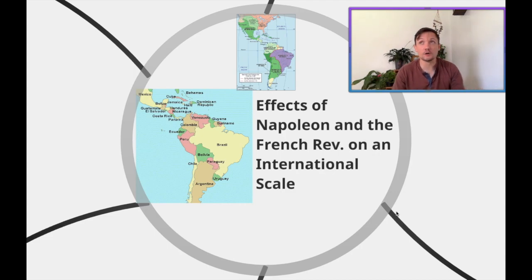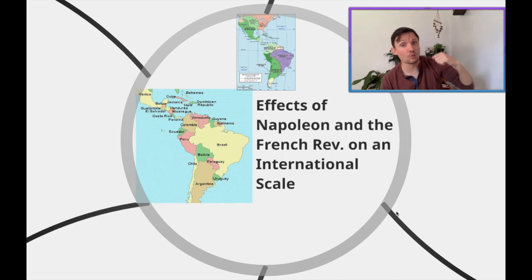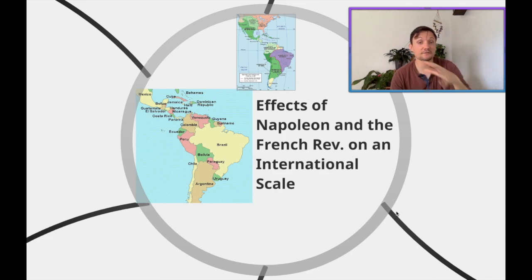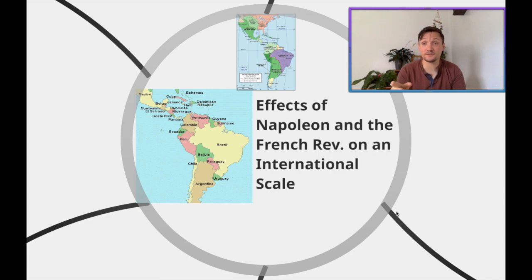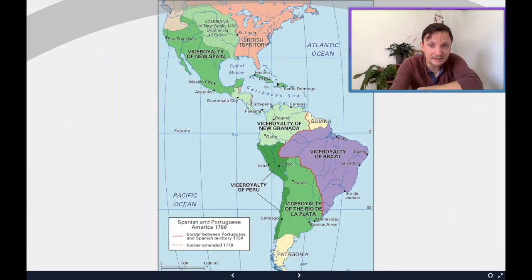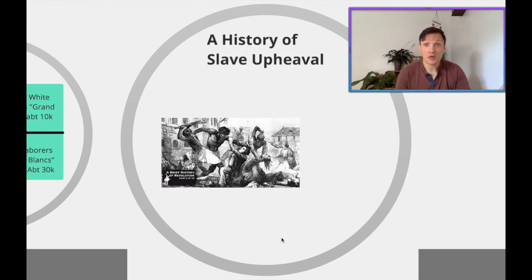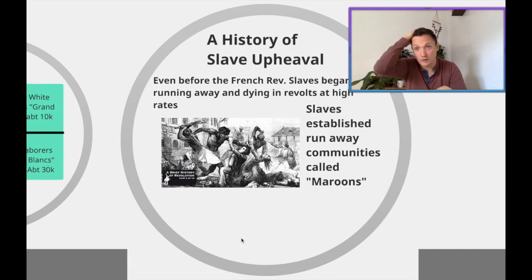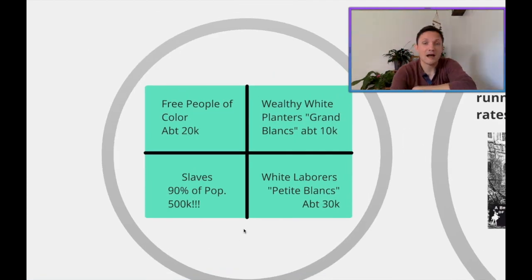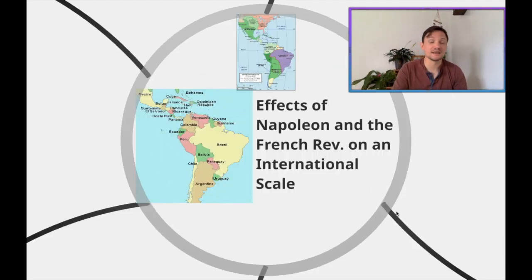Getting into it — the crazy stuff going on in Europe — we're going to hit pause on that for a little bit and wind it back. We're now going to talk about the effects of Napoleon and the French Revolution on an international scale, because it's going to dramatically change everything. We're going to try and fly through this one, so go ahead and buckle up.